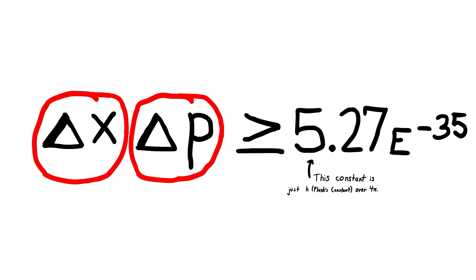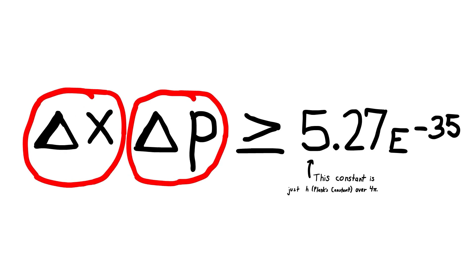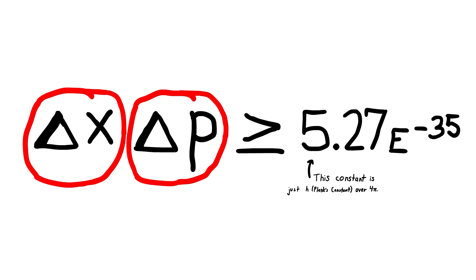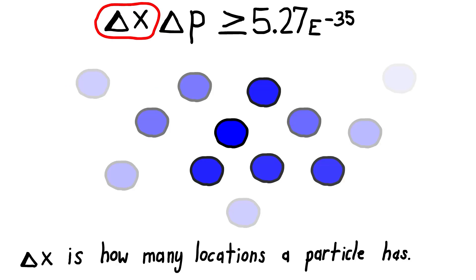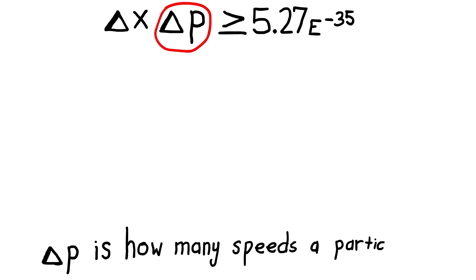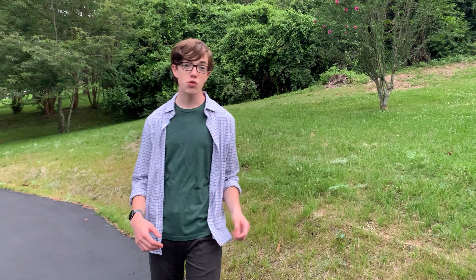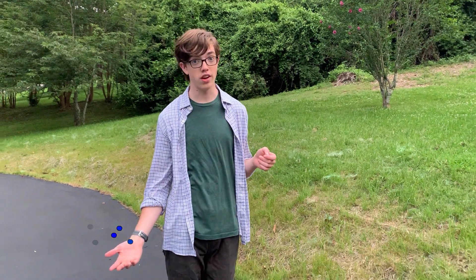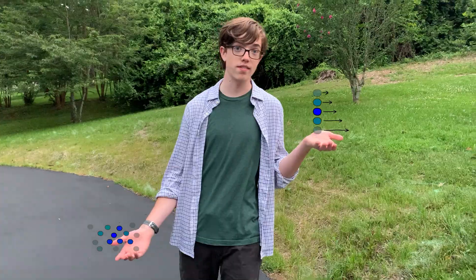These two variables must be greater than or equal to this very small constant when they are multiplied together. Delta X represents how many locations a particle has at any given time, and delta P represents how many speeds a particle has at any given time. When we narrow down the area that a particle can be located in, we have to compensate by broadening the range of speeds that a particle goes at.